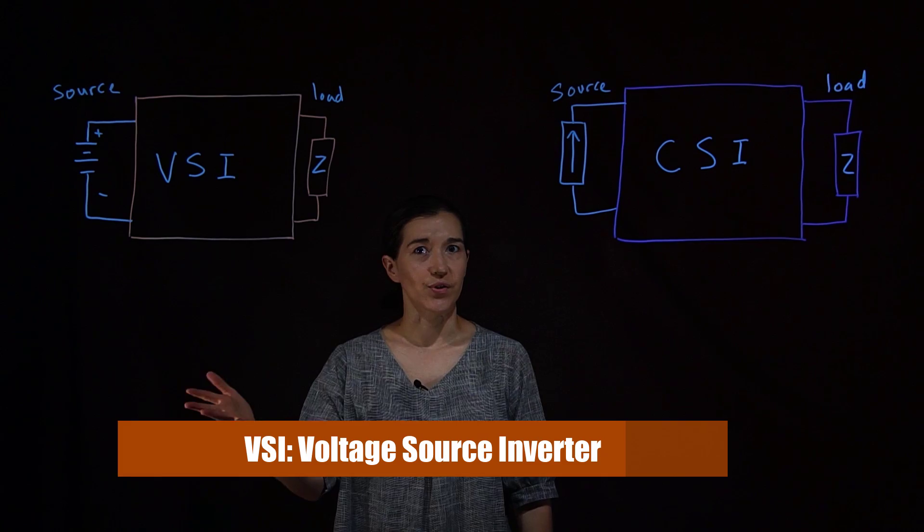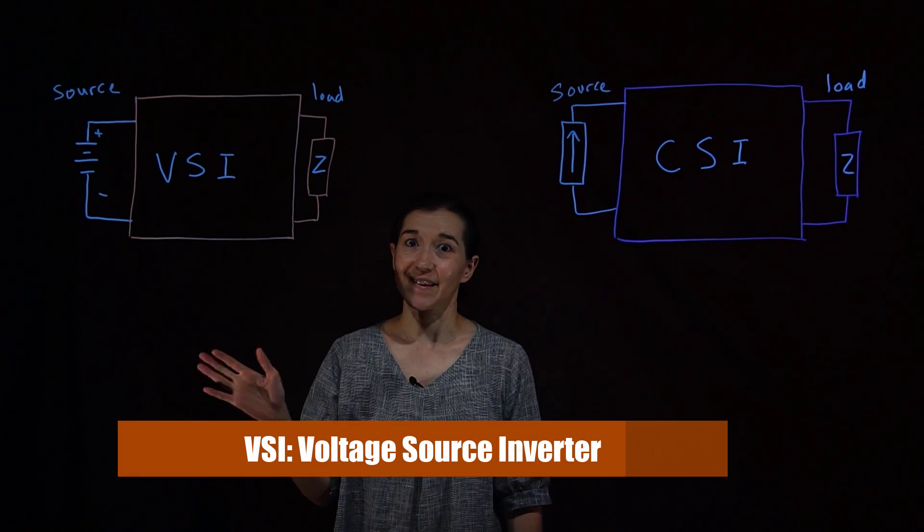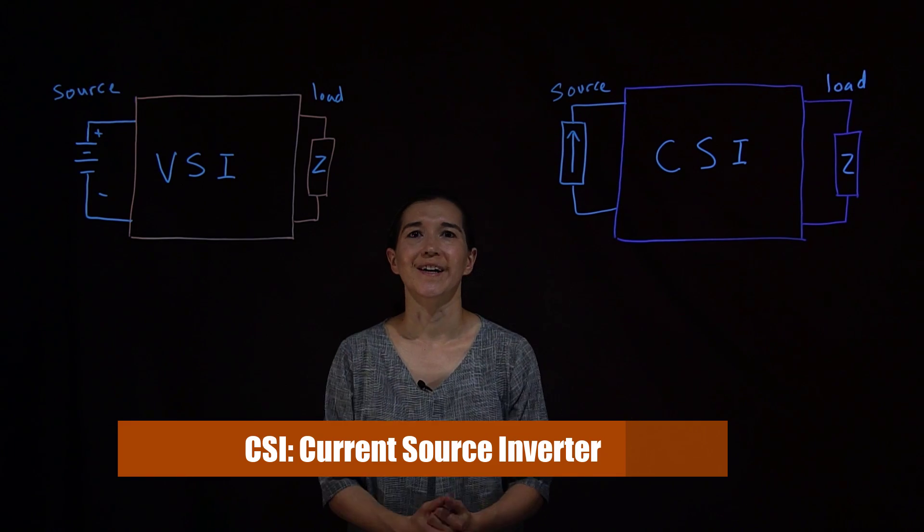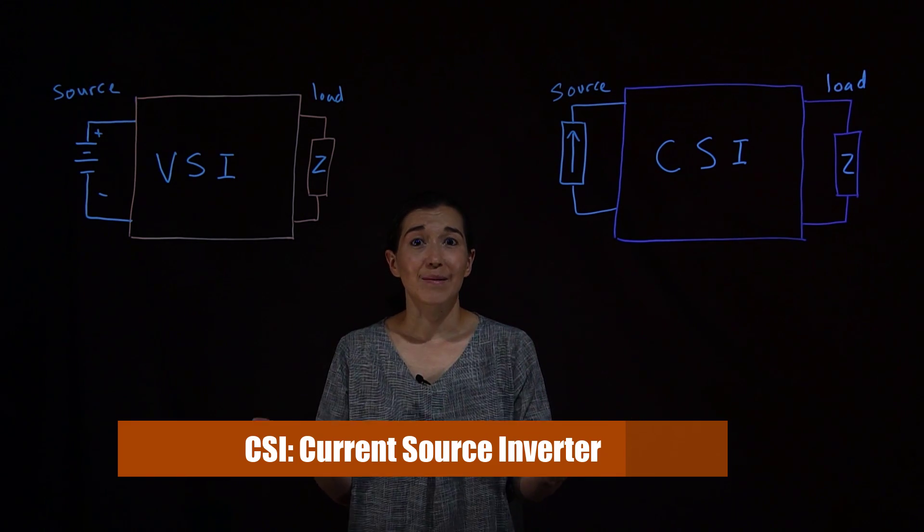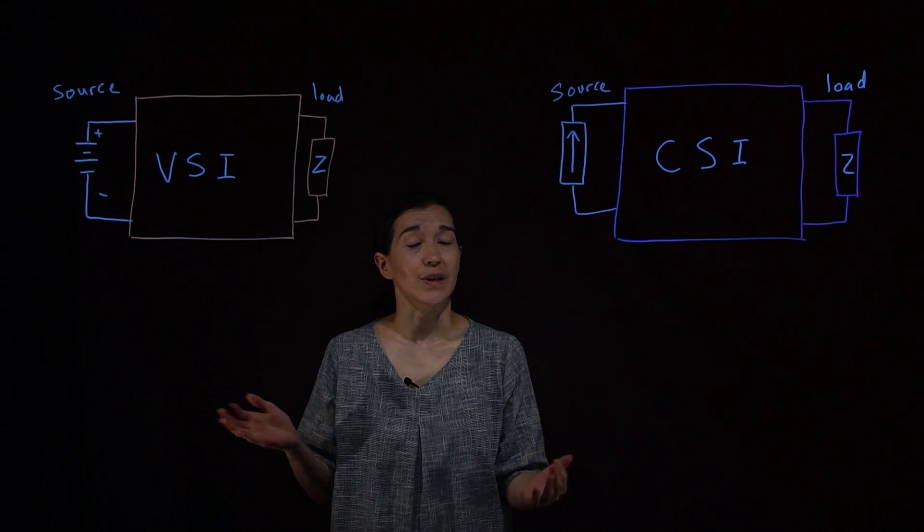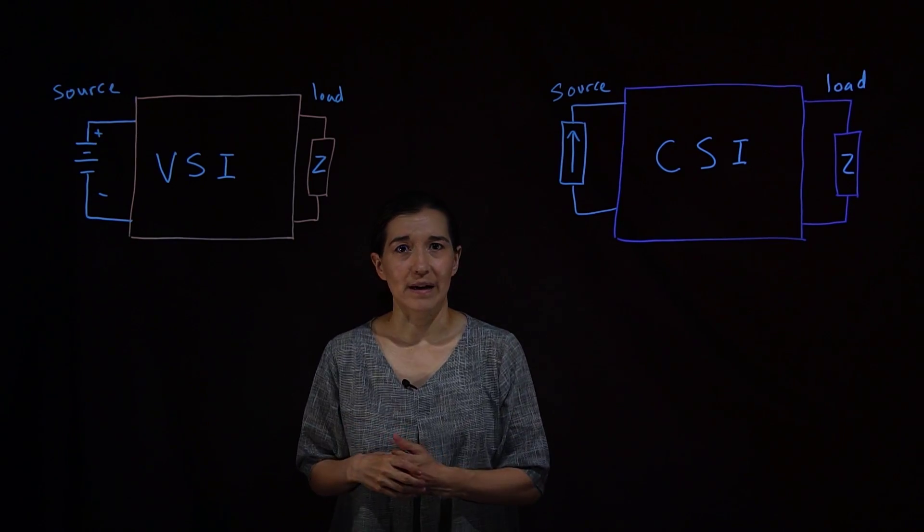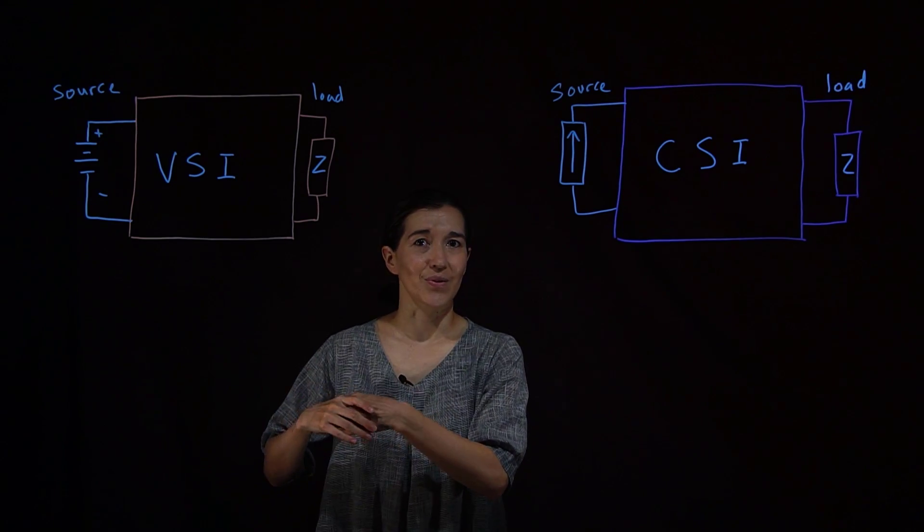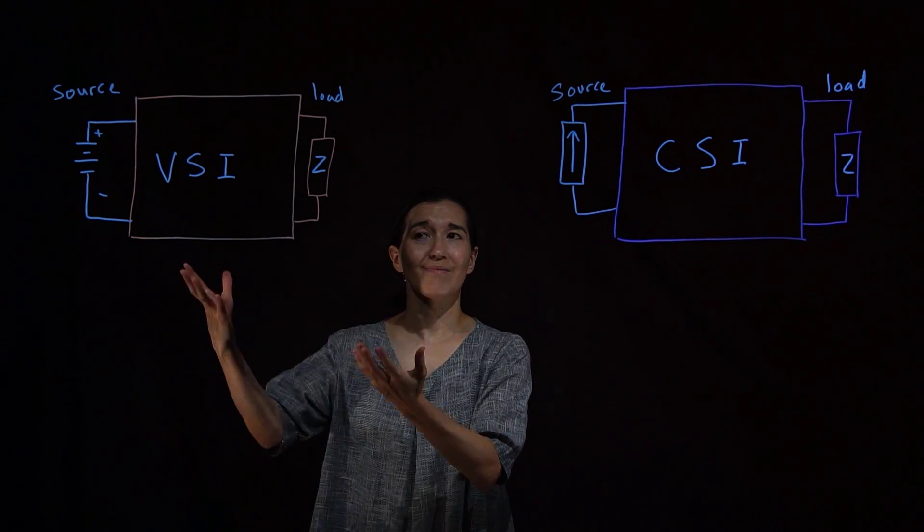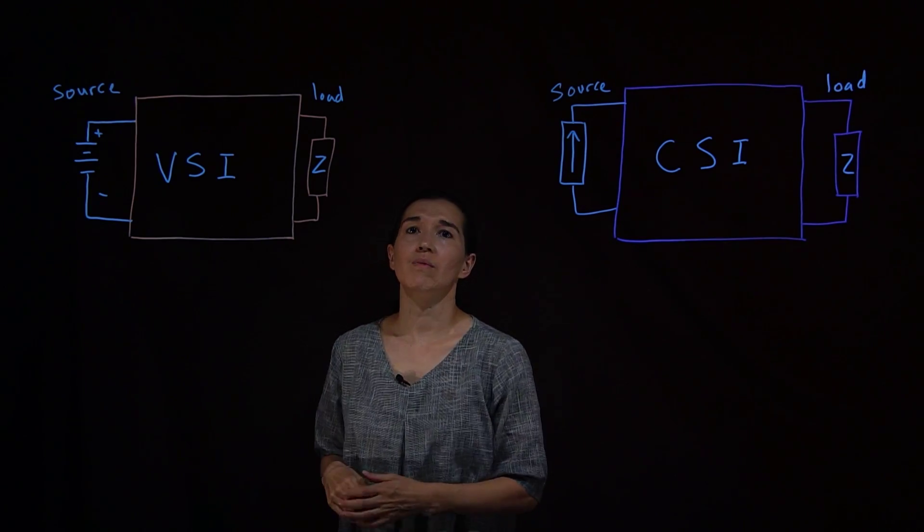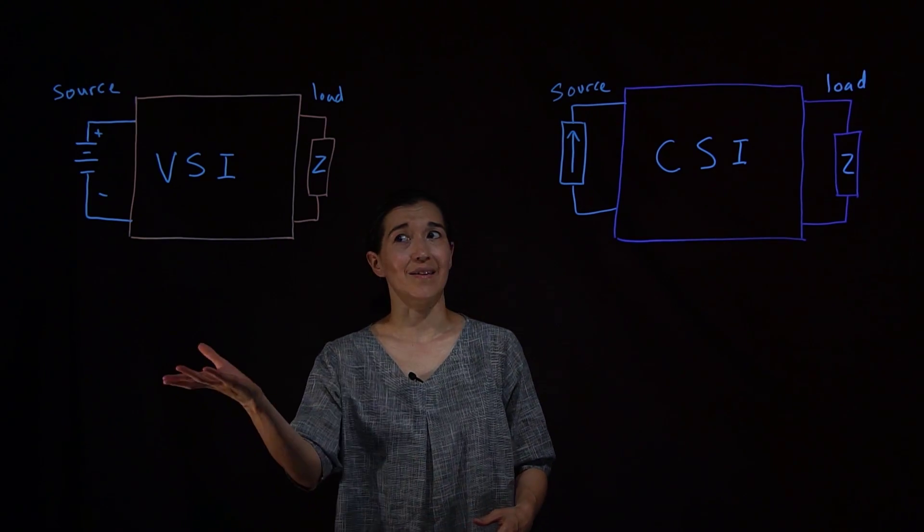One is called the voltage source inverter, VSI for short, and one is the current source inverter. The basic concept is that the sources fundamentally act differently. One acts like a voltage source. So say you had some capacitors or some batteries or some voltage type component that is acting like your source, then we would model our source as a voltage source.